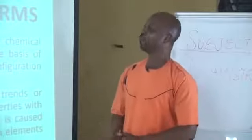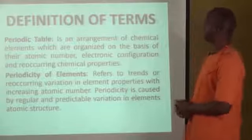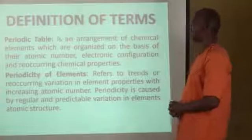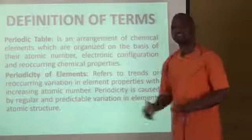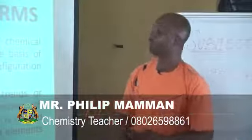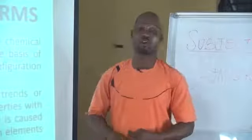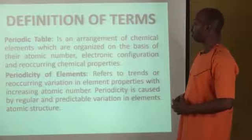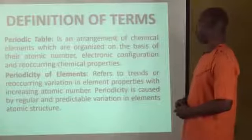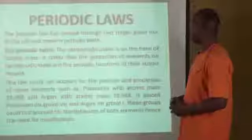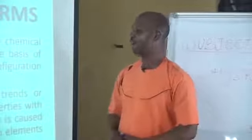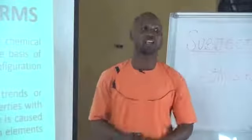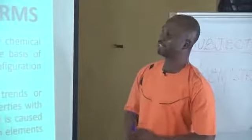The definition of terms. The periodic table is an arrangement of chemical elements which are organized on the basis of their atomic number, electronic configuration, and reoccurring chemical properties. The periodicity of elements refers to the trend or reoccurring variation in elements' properties with increasing atomic number. Periodicity is caused by regular and predictable variation in the elements and their atomic structure.